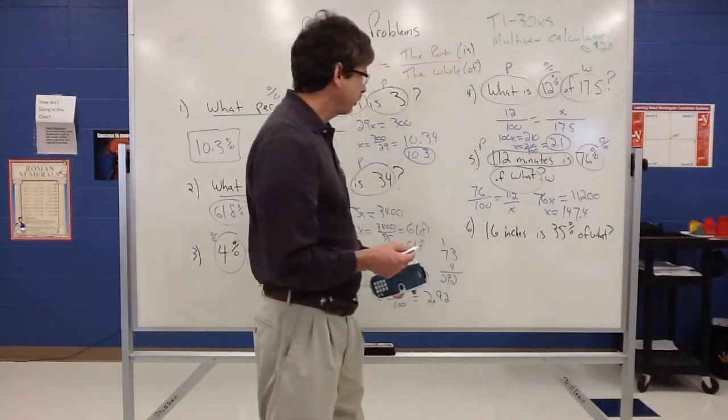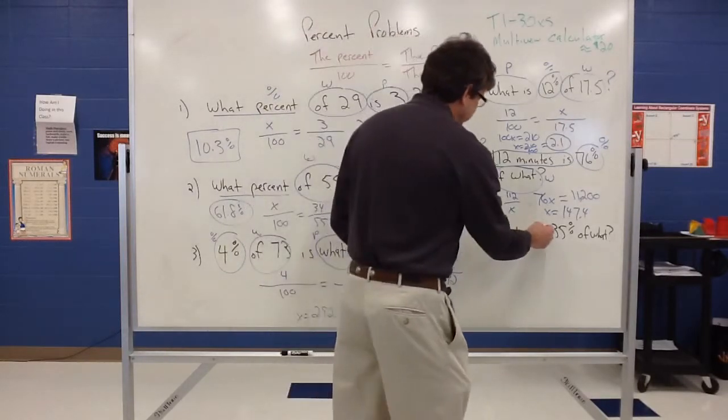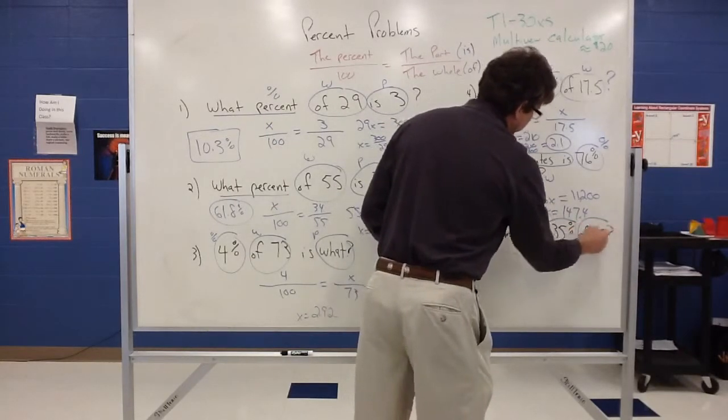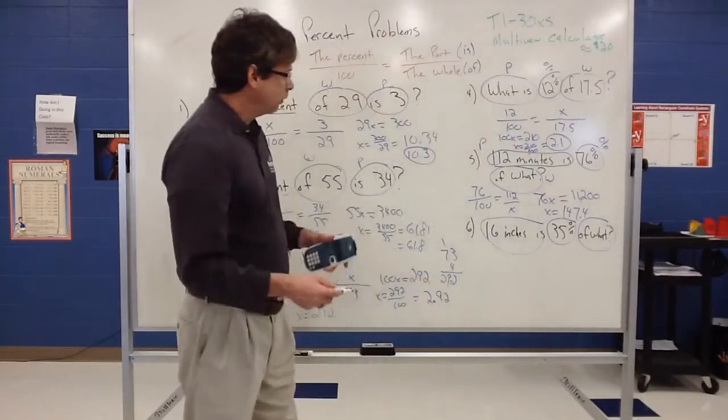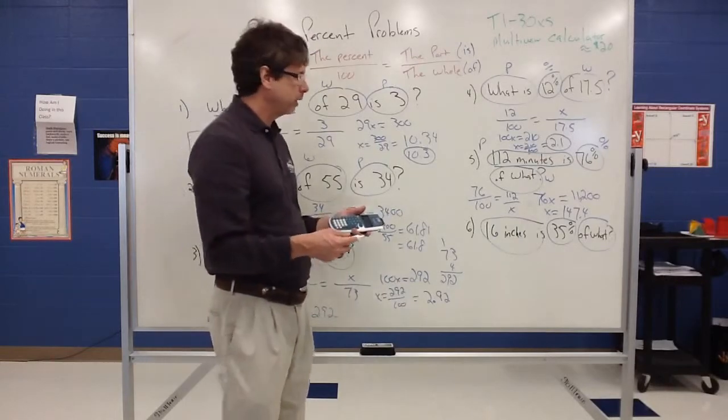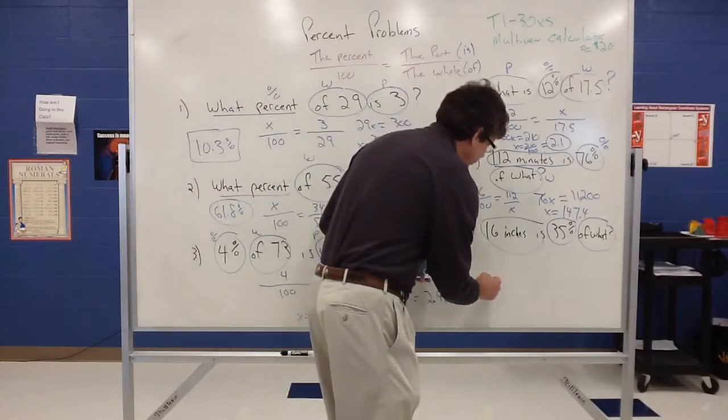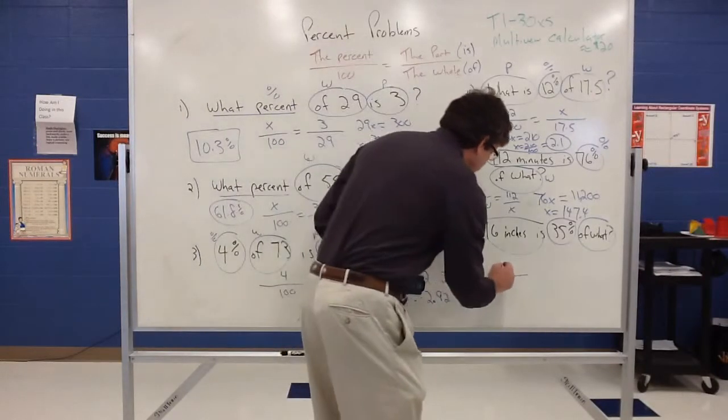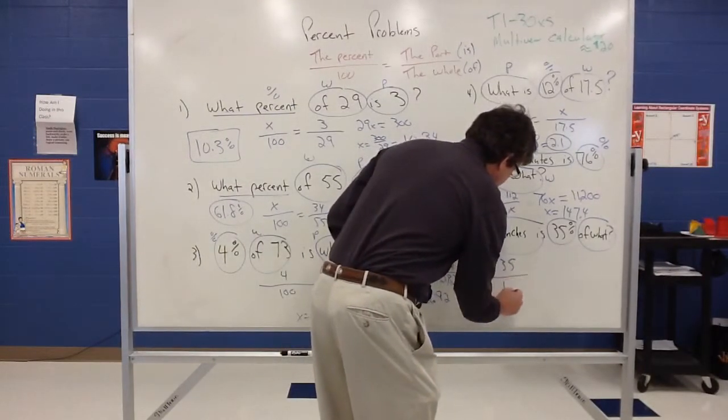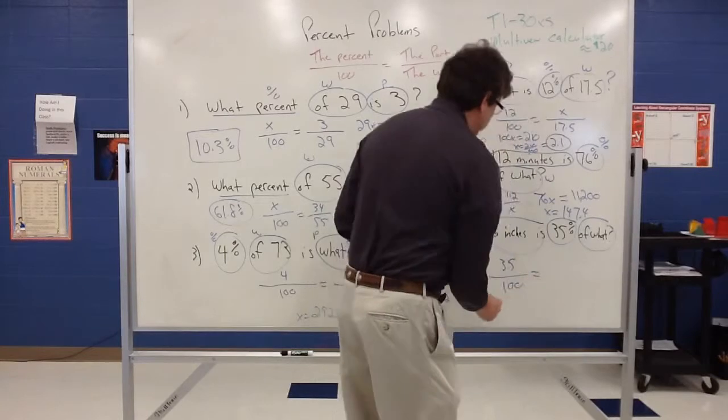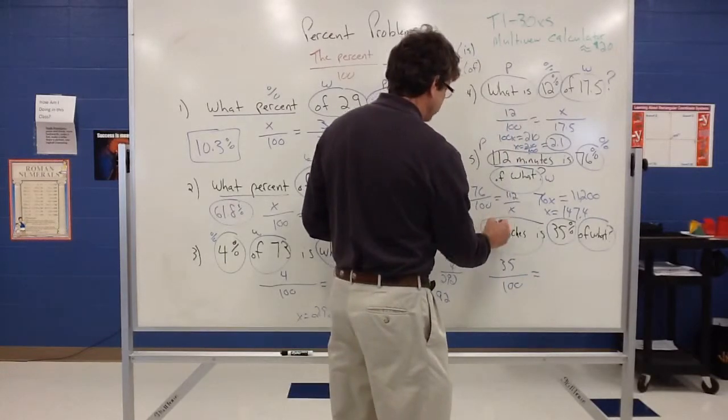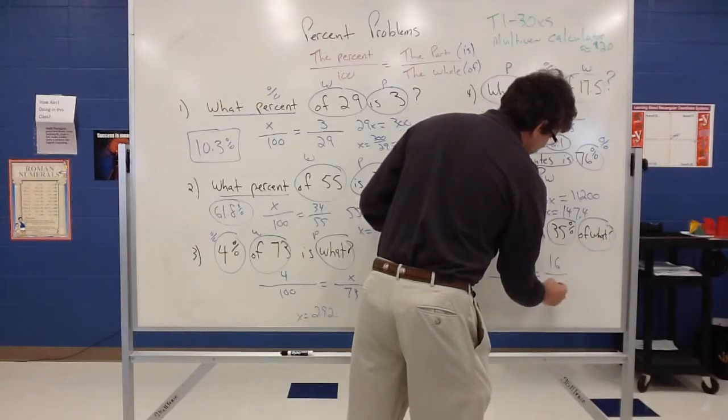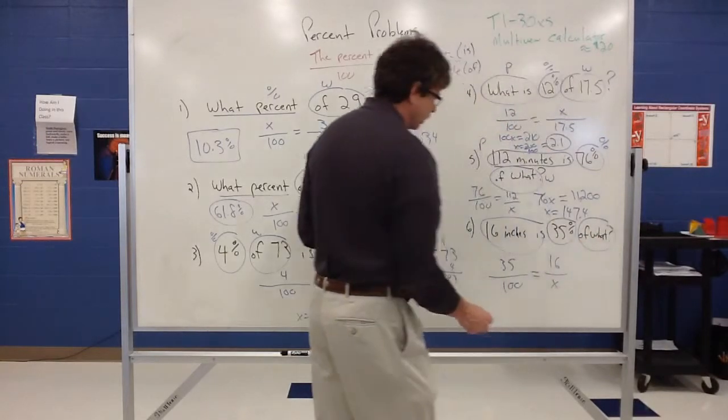This last example, 16 inches is 35% of what? 16 inches is 35% of what? That's how, again, we can kind of pick up on the part, whole, and percent thing. So our percent always goes over 100, so that's 35 over 100. And the part is 16, that goes on the top. The whole is the unknown.